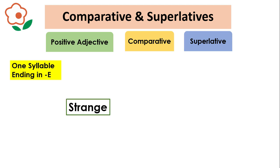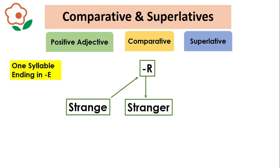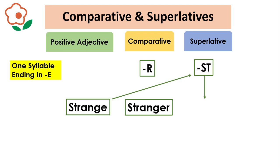Similarly, for the adjective 'strange', we add R and it will be 'stranger'. To make it superlative, we add only ST and it will be 'strangest'.